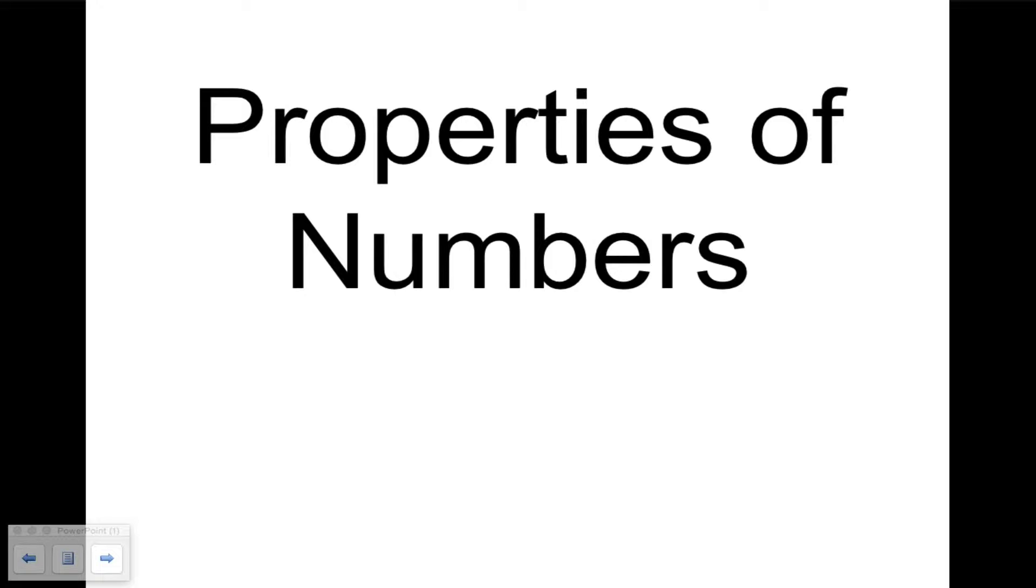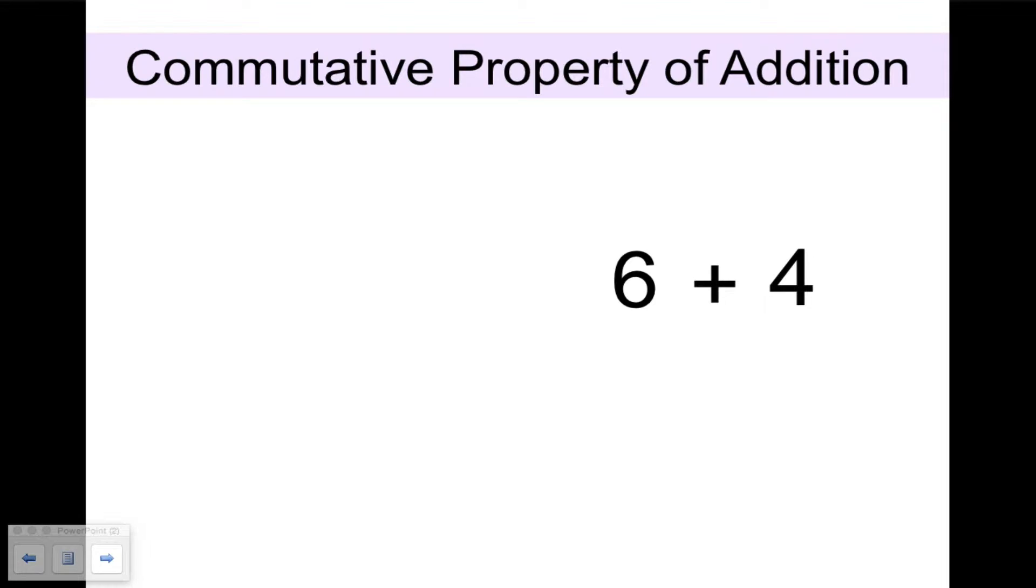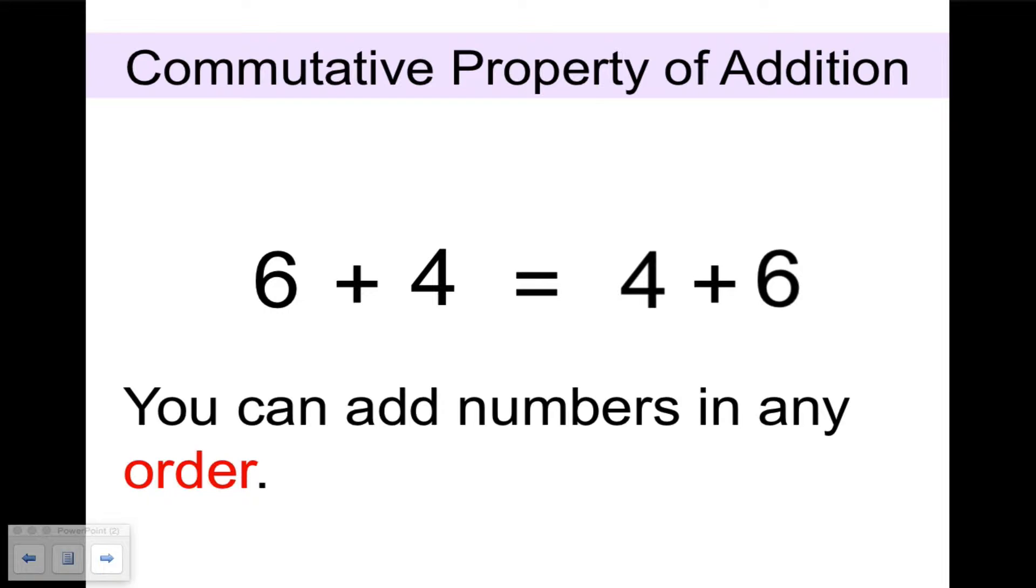Let's get started with our first property, which is called the commutative property of addition. The commutative property of addition tells us that 6 plus 4 is equal to 4 plus 6. It might seem obvious: 6 plus 4 is 10, 4 plus 6 is 10, so 10 equals 10. The commutative property of addition tells us that you can add numbers in any order.